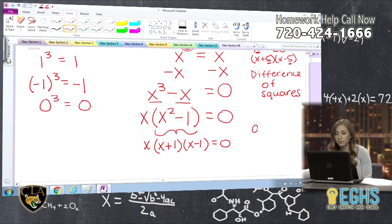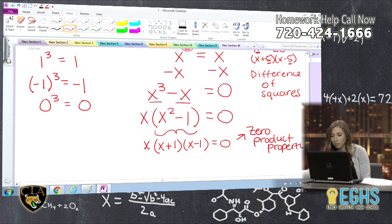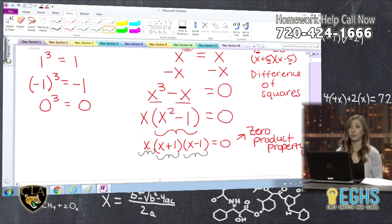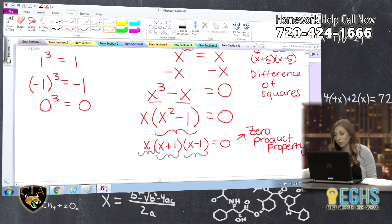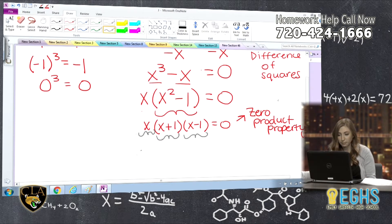And the reason why this is an algebraic strategy to solve this is what you can do is use the zero product property to solve, which means anything times zero is just zero. And what we're saying here is I have something times something else times something else, and that's all equal to zero. So if any one of those three factors were equal to zero, this equation would be true.